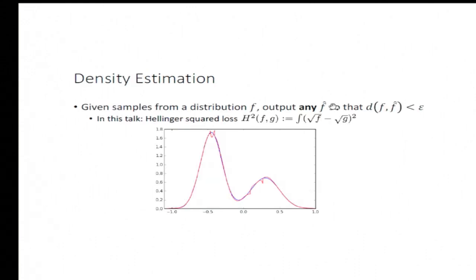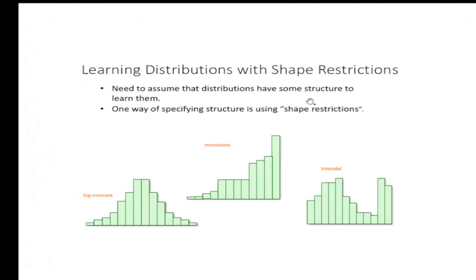The setting is the classical density estimation setting. We get samples from a density assumed to belong to a class. We want to output a hypothesis that is close with respect to some metric. For this talk, the metric is going to be the Hellinger distance, which I'm reminding you how it's defined here.